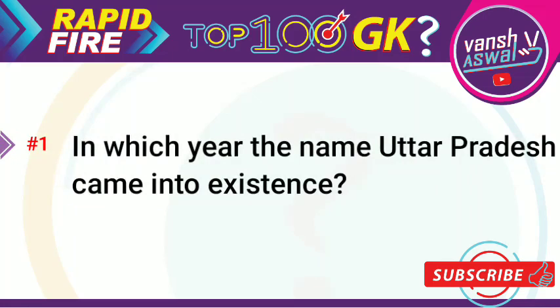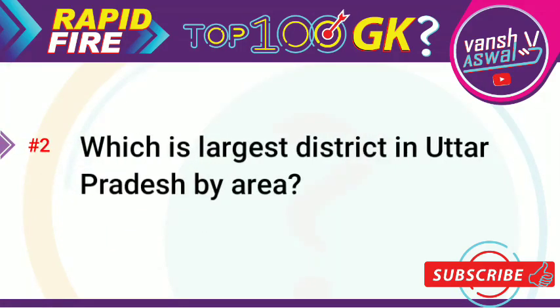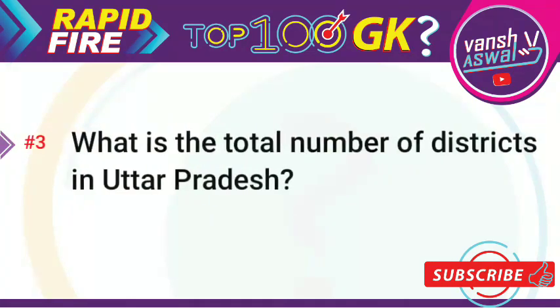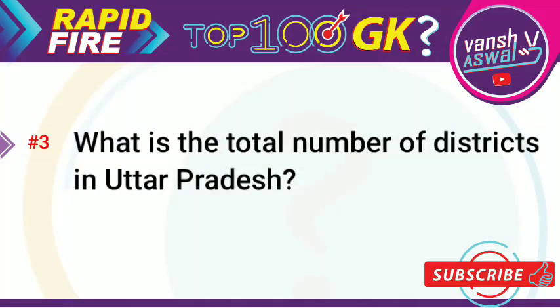Question 1: In which year did the name Uttar Pradesh come into existence? The answer is 1950. Question 2: Which is the largest district in Uttar Pradesh by area? The right answer is Lakhimpur Kheri. Question 3: What is the total number of districts in Uttar Pradesh? The answer is 71.